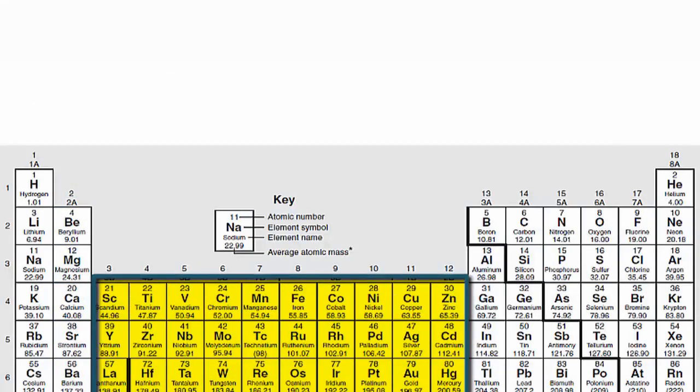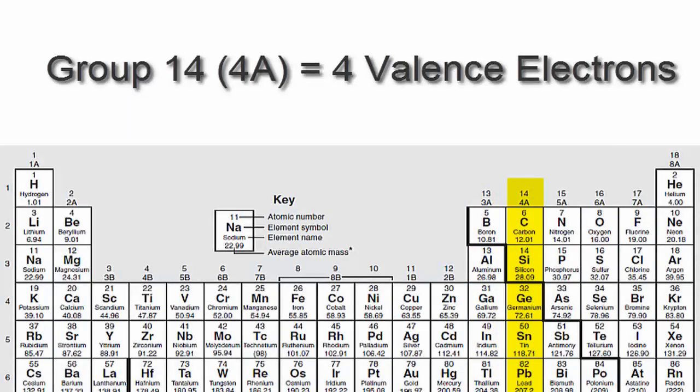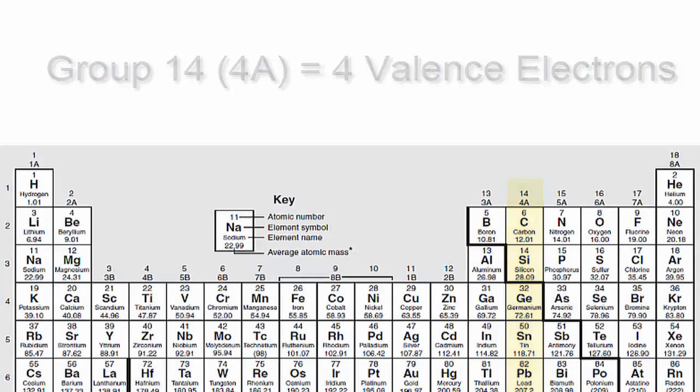We'll skip over the transition metals since they're a bit more complicated and probably don't apply to you. We'll go to 13 or 3A, which have three valence electrons, then 14 or 4A. Each of those elements in group 14 or 4A have four valence electrons,